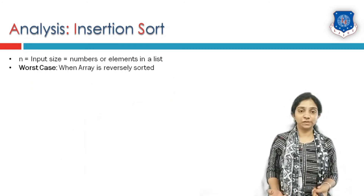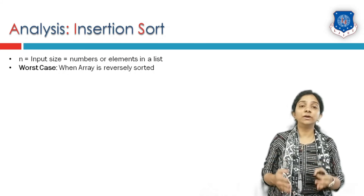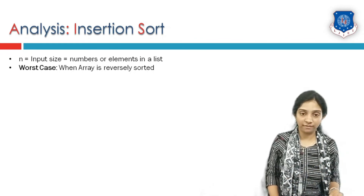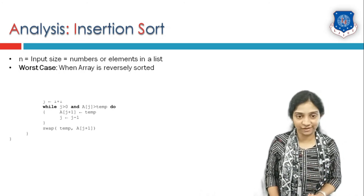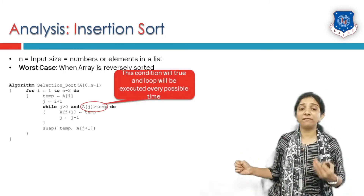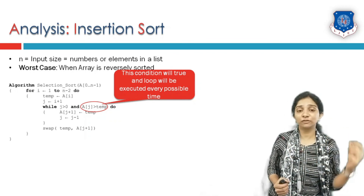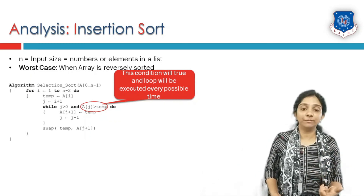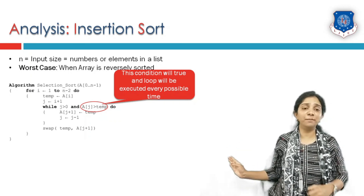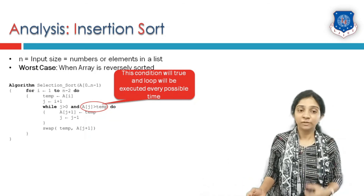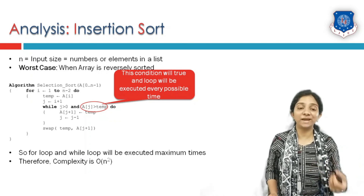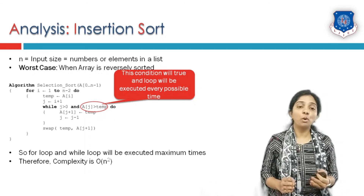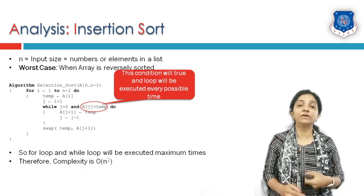Now let us talk about the worst case. The worst case of insertion sort is when the list is sorted in reverse order — that is, in descending order when we want ascending order. In this case, the while-loop condition is true every single time, and every element gets shifted to the start of the array on each pass. The while loop executes the maximum possible number of times for each iteration of the outer for loop. That is why the worst-case complexity of insertion sort is O(n²) or Θ(n²).